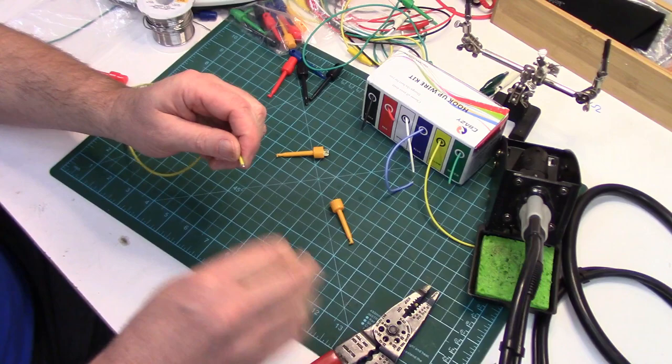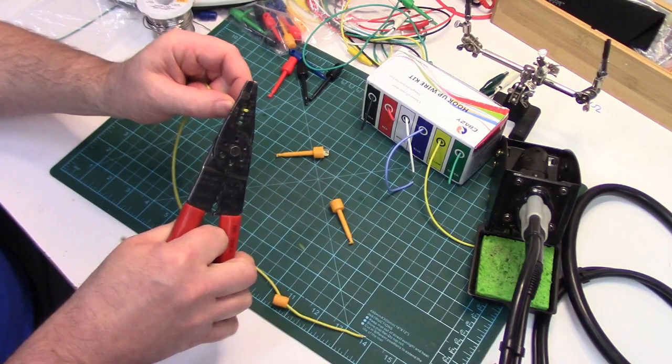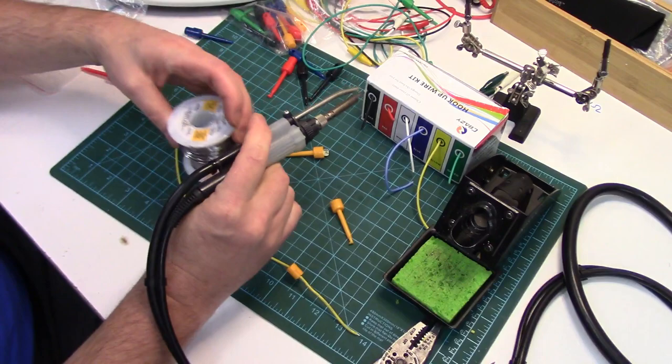Then we'll just strip a little bit off the end. You don't need much—we're just tagging it on the end of the clip. I'm just going to tin those real quick.